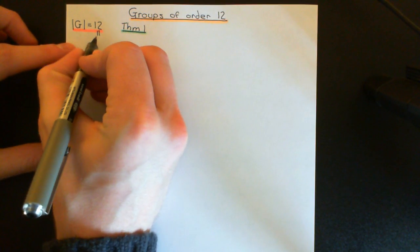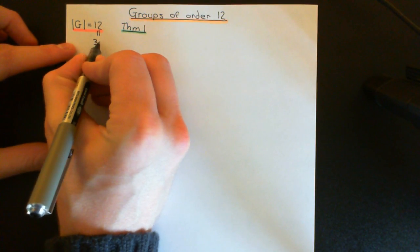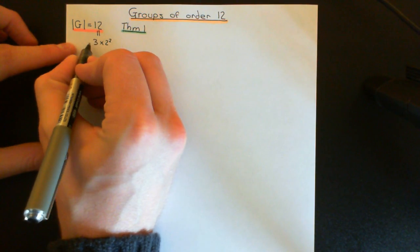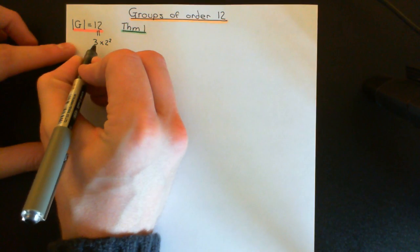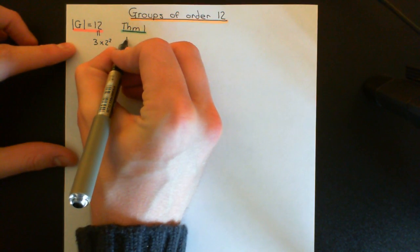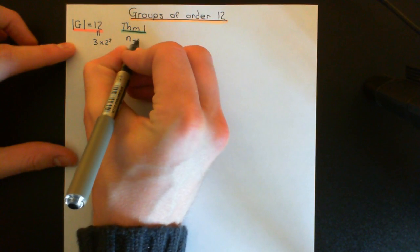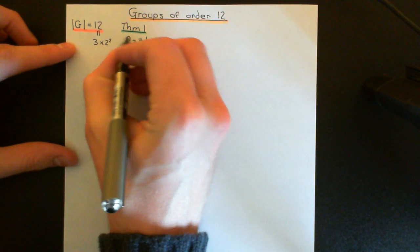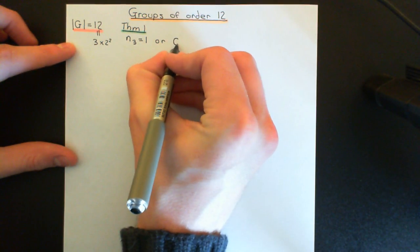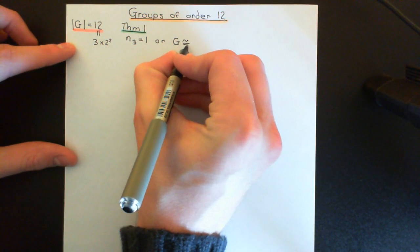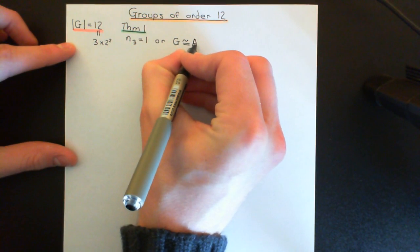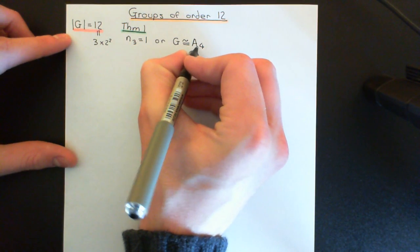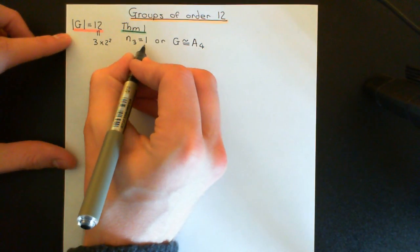If we take the prime factorization of 12, we get 3 times 2 squared. By Sylow's first theorem, we will have Sylow-3 subgroups of order 3. The claim of Theorem 1 is that the number of Sylow-3 subgroups is either equal to 1, or if you know that's not the case for your group of order 12, then you can instantly conclude that your group G is isomorphic to the alternating group on the set of four elements.